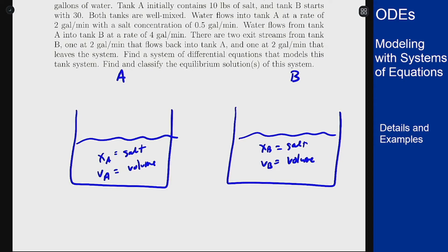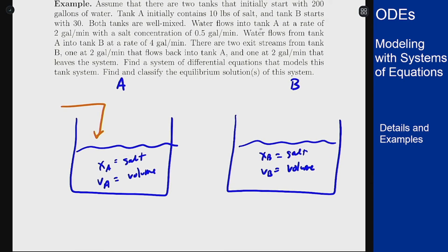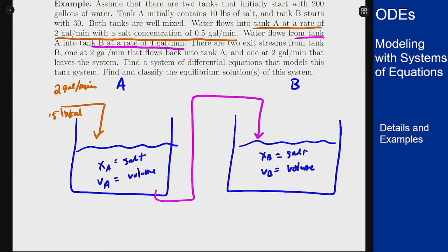In orange we'll have the inflow stream to A. So that reads from right here into tank A at a rate of 2 gallons per minute, salt concentration of 0.5. There's a flow from A into B at a rate of 4 gallons per minute. So A comes out into B, this is 4 gallons per minute. And I know the concentration is going to be XA divided by VA because it's always the amount of salt in the tank divided by the volume. That's how the well-mixed tanks always work.